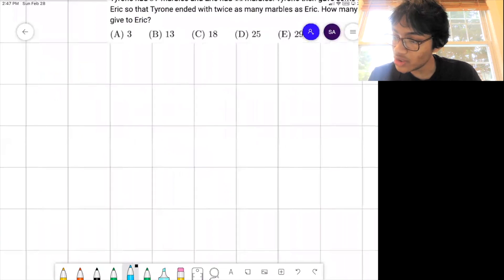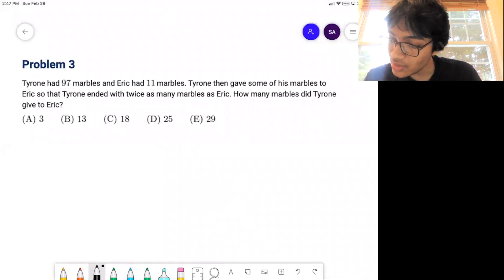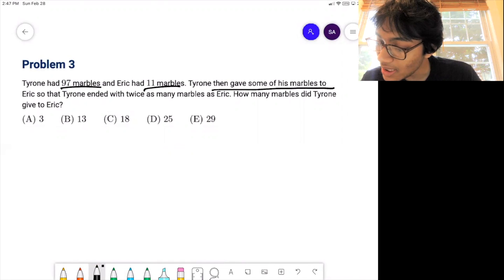Alright, let's move on to question 3. Tyrone had 97 marbles, Eric had 11. Tyrone gave some of his marbles to Eric, so that Tyrone ended up with twice as many marbles as Eric. How many marbles did Tyrone give?